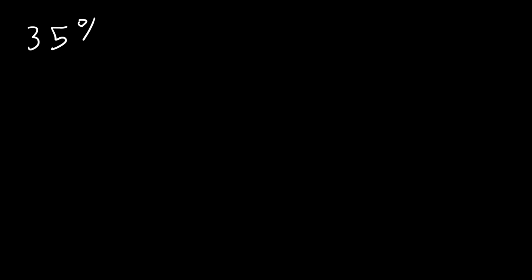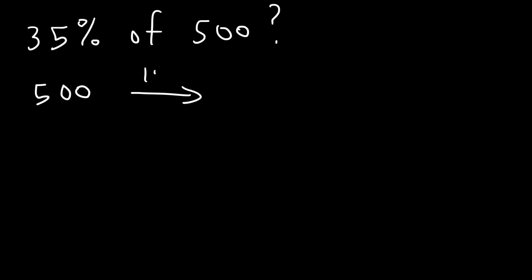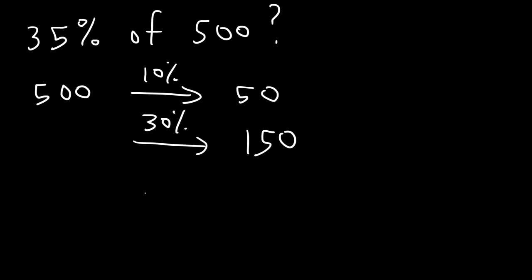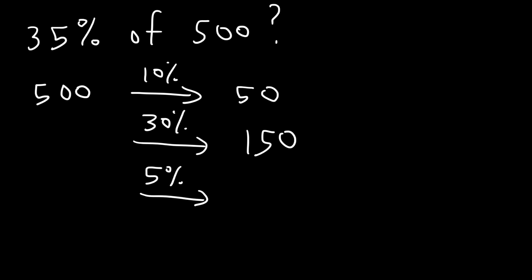Now let's work on a similar example. What is 35% of 500? I'm going to find 10% of 500, which is 50. So 30% of 500 is 3 times 10%, which is 50 times 3, equal to 150. Next, I need to find 5% of 500: 5% is half of 10%, and half of 50 is 25.